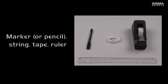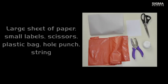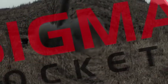First, we will make a pattern using a marker or pencil, string, tape and ruler. You will also need a large piece of paper, some small labels or masking tape, either a plastic sheet or bag, a small hole punch and some parachute string.